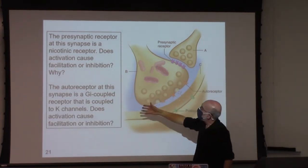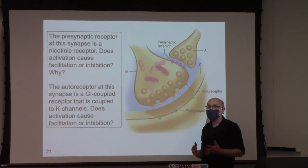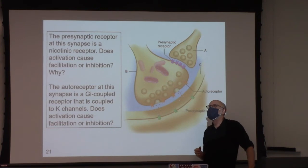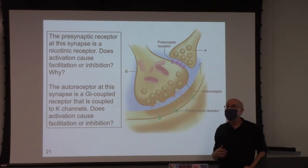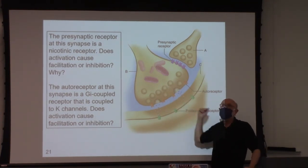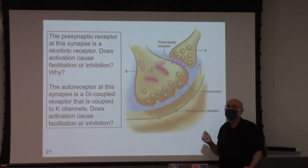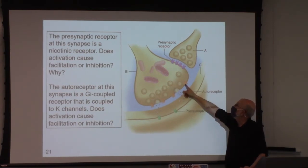Let's talk about autoreceptors. The autoreceptor at the synapse is GI-coupled and is coupled to potassium channels — GIRK channels. I asked you to work on this in the problem set. Is that going to cause facilitation or inhibition? Is there going to be autoreceptor-dependent facilitation or inhibition of neurotransmitter release? Activation of potassium channels downstream from this receptor.